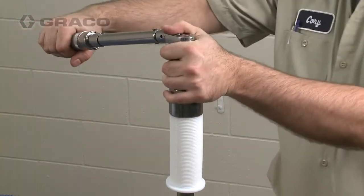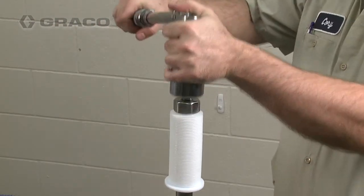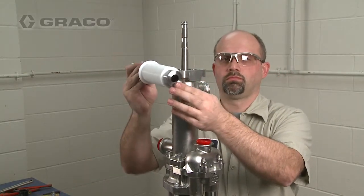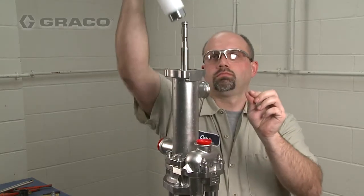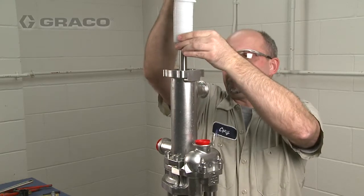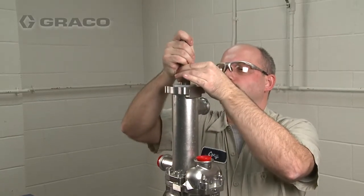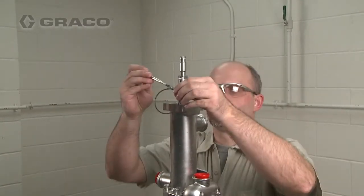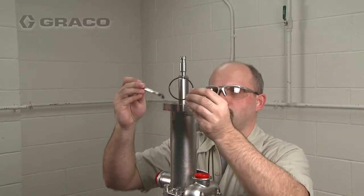Torque the bellows nut between 25 and 30 foot-pounds. Insert the bellows assembly over the piston rod and into the bellows chamber. Lubricate and install the bellows o-ring.